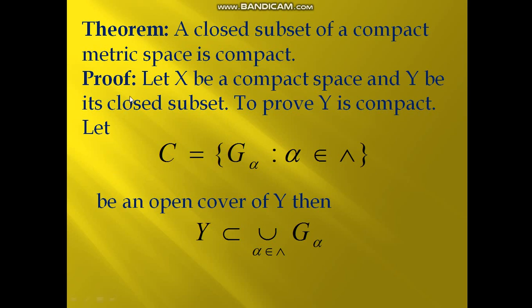So let us start the proof. Let X be a compact space and Y be its closed subset. To prove Y is compact, we have only one thing to show: let us assume an open cover, and then we find a finite subcover of that.